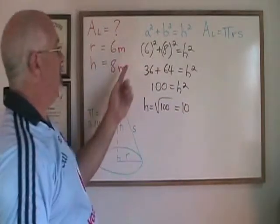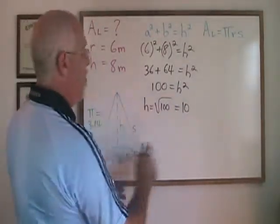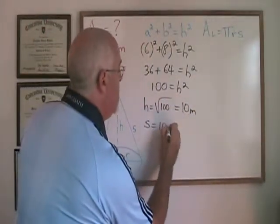Therefore H is equal to the square root of 100 which is 10, and because we were dealing with meters for our distances, the hypotenuse of this right triangle is 10 meters in length. That means our slant height is 10 meters.